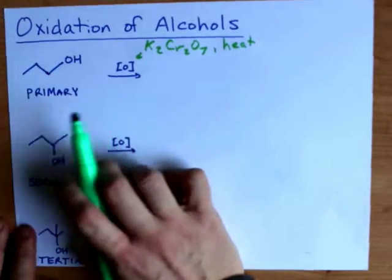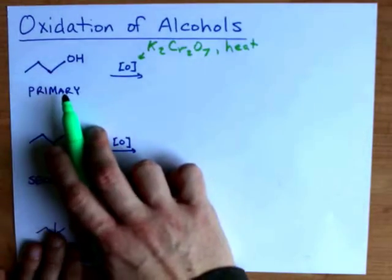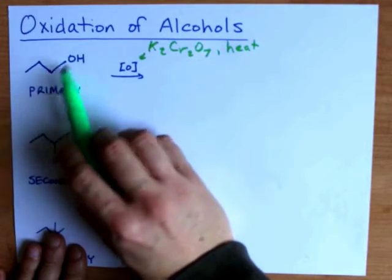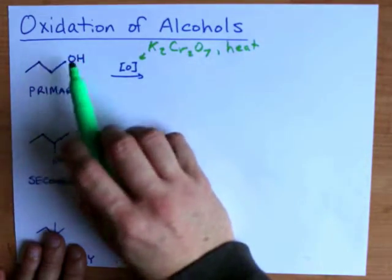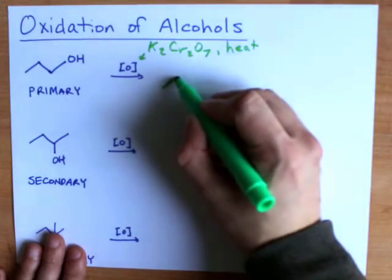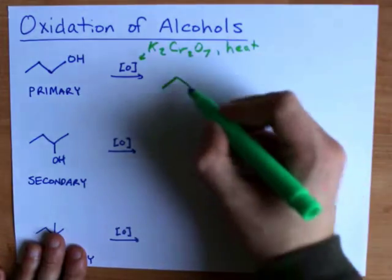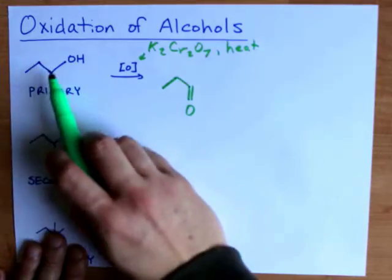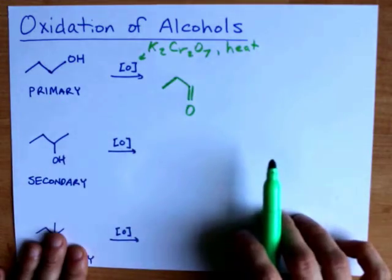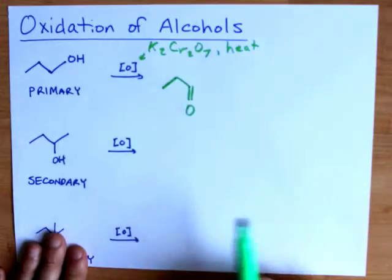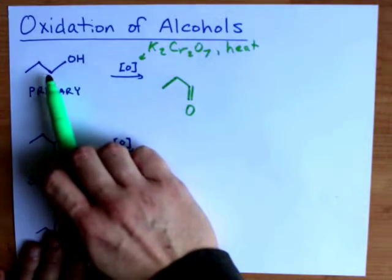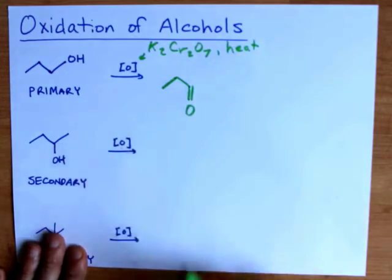The first oxidation that happens to primary alcohols converts it to an aldehyde. Now this is a three carbon chain with an OH at the end. So I want a three carbon chain as the product and I convert it to an aldehyde by making it a double bonded O instead of a single bonded OH. Oxidation here is actually the removal of this H and the removal of an H off of this carbon to create this double bond.